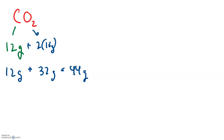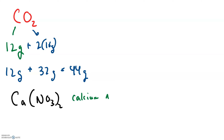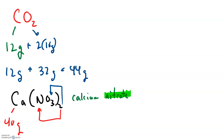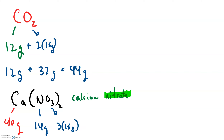What about a polyatomic ion? Here's an ionic compound called calcium nitrate. Ionic compounds don't use prefixes, but they often involve polyatomic ions like nitrate. Calcium has a molar mass of 40 grams. For the nitrate, we can add up the mass of one nitrate and multiply by 2. Nitrogen is 14 grams and oxygen is 16 grams — there are three oxygens in a nitrate. So 3 times 16 is 48, plus 14 is 62.